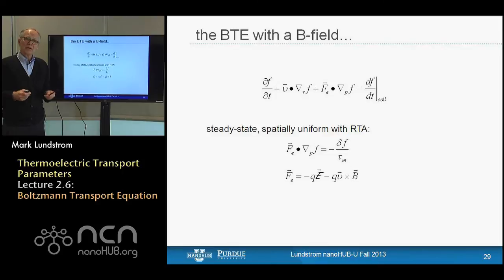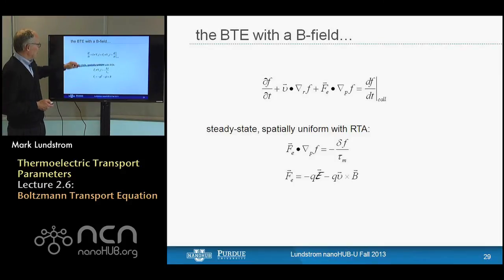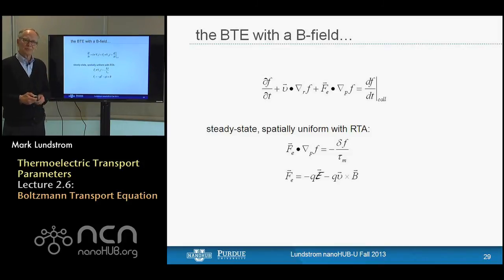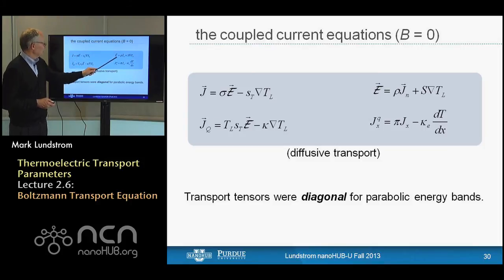It's equally easy to solve for the Seebeck coefficient, the Peltier coefficient, and the electronic thermal conductivity, and in every case we get the same result from the Boltzmann transport equation as from the Landauer approach. One case where the Boltzmann equation is particularly convenient is when we have a magnetic field — measuring Hall effect or something. It's straightforward to include a magnetic field by adding the magnetic force to the force term and going through the calculation, though with more math involved.